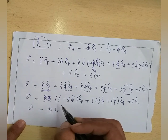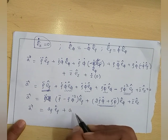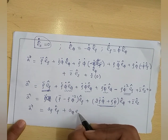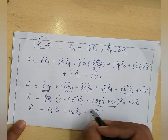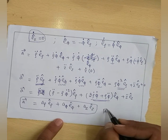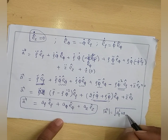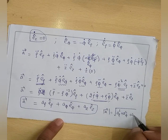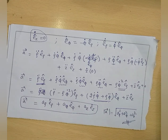So acceleration in cylindrical coordinates is: a = a_rho·E_rho-cap plus a_phi·E_phi-cap plus a_z·E_z-cap, where a_rho = Rho-double-dot minus Rho·Phi-dot², a_phi = 2·Rho-dot·Phi-dot plus Rho·Phi-double-dot, and a_z = Z-double-dot. The magnitude is root of (a_rho² + a_phi² + a_z²). This completes displacement, velocity, and acceleration in cylindrical coordinates.